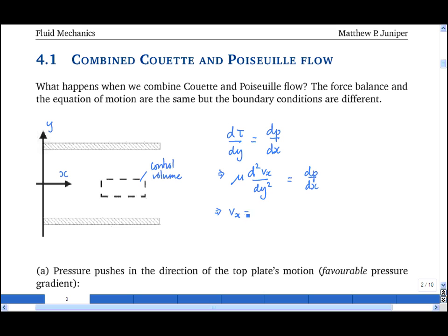is of this form: vₓ = (1/2μ)(dp/dx)y² + by + c. The constants b and c are evaluated from the boundary conditions, but we can see that the velocity profile is parabolic.